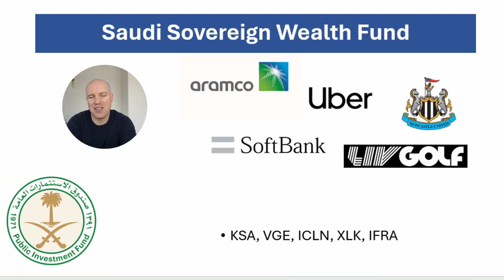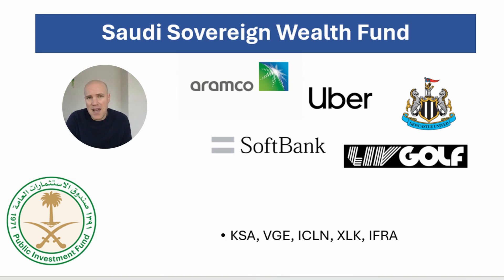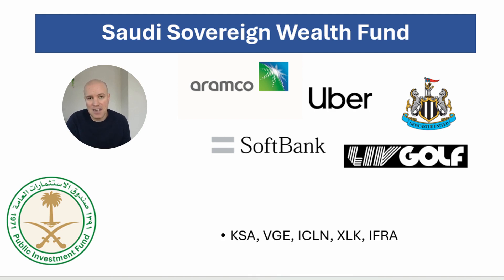The last sovereign wealth fund is the Saudi Sovereign Wealth Fund, also known as the Public Investment Fund. It invests both domestically and internationally in a variety of investments — not completely transparent, but it includes ownership of massive organisations such as Saudi Aramco, and also has stakes in Uber, Newcastle United, SoftBank, and LIV Golf. It's nearly impossible to fully mimic the Saudi Wealth Fund due to the sheer number of investments, but there are ETFs you can use to invest in a similar way — such as ICLM (clean energy), XLK (technology sector), infrastructure, emerging markets, and KSA (an NYSE ETF focusing on Saudi Arabia).